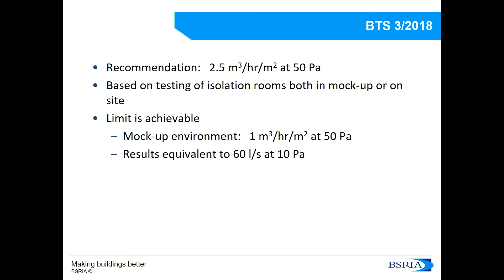2.5 is not a random number — it is based on BISRIA's experience with airtightness. We have a very large airtightness department. We agreed on 2.5, but in reality, if you can achieve a smaller number it would be even better. This number is achievable: for example, in a mock-up environment at BISRIA, when we took care of airtightness from the design stage, we achieved 1 cubic metre per hour per square metre. There are hospitals and other isolation rooms that can actually achieve this limit or lower.